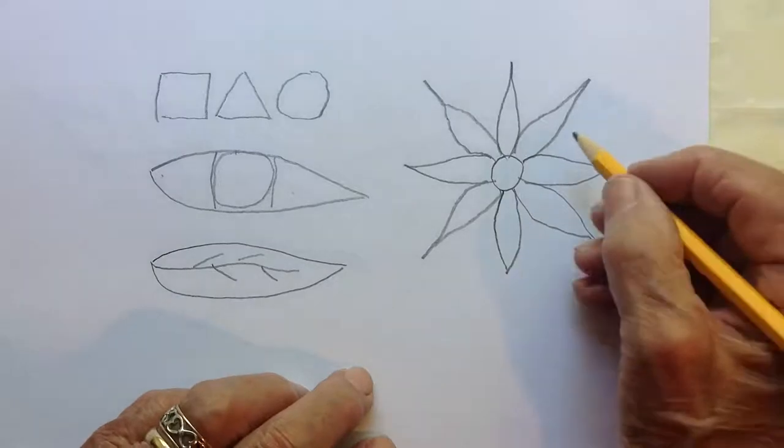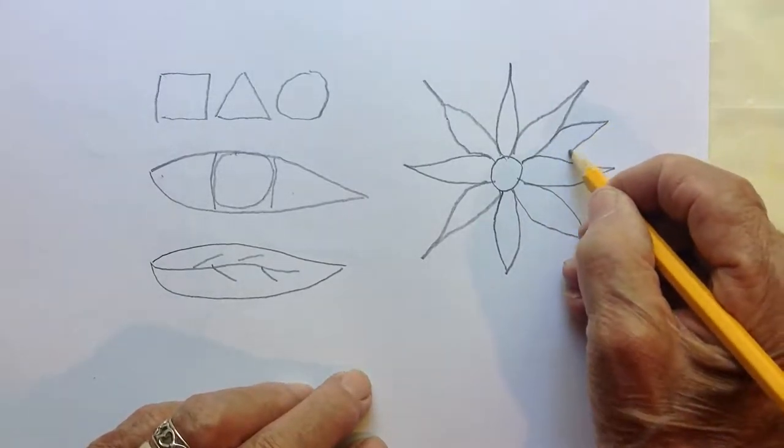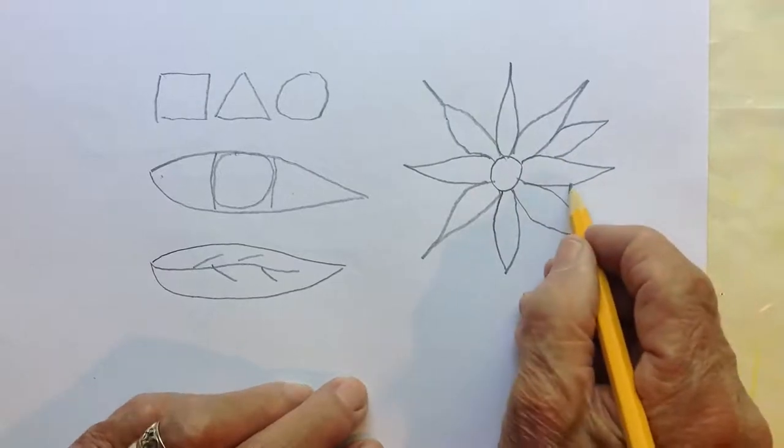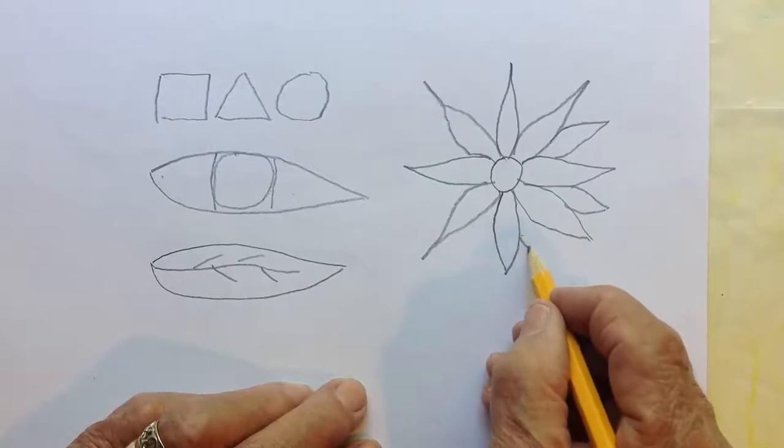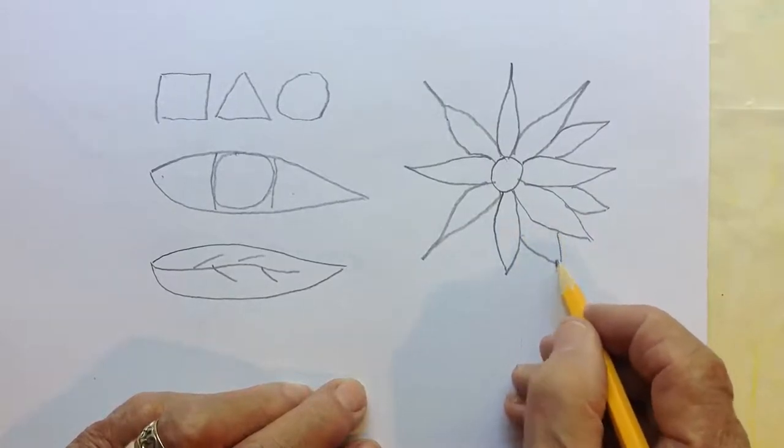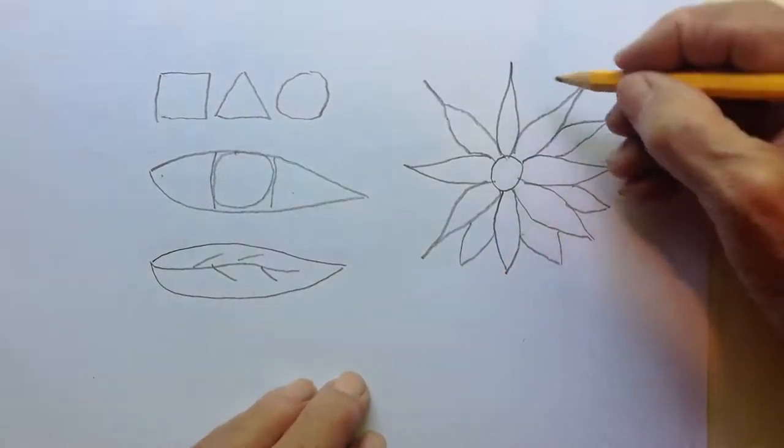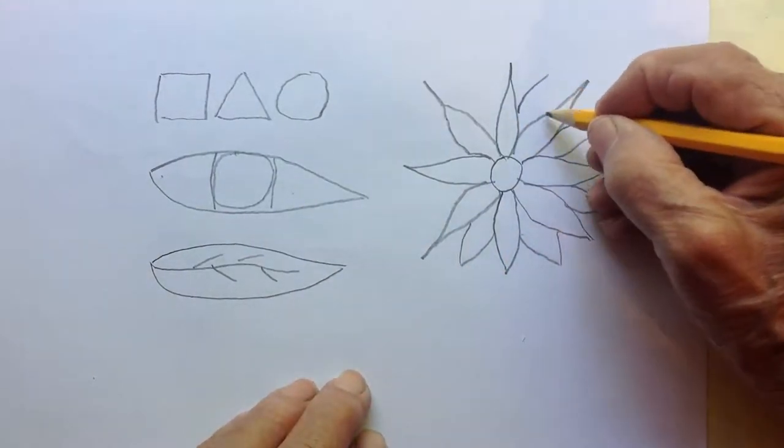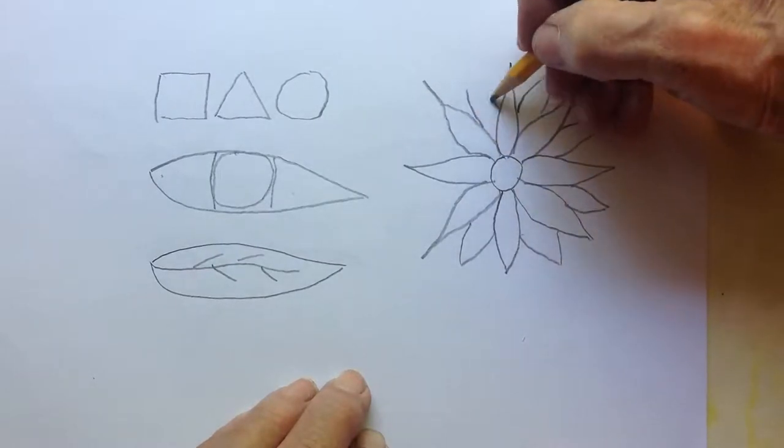Now, if you want to be a little more ornate about this flower, you can add a partial petal behind it by going like that.